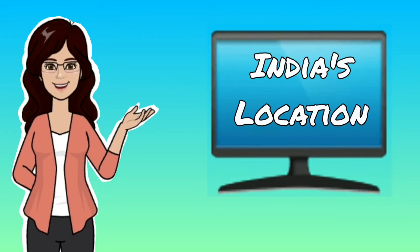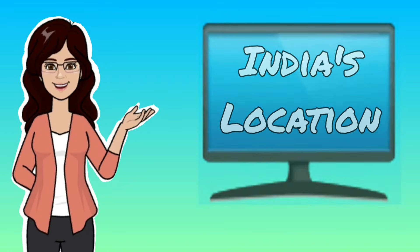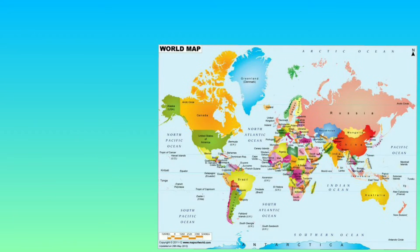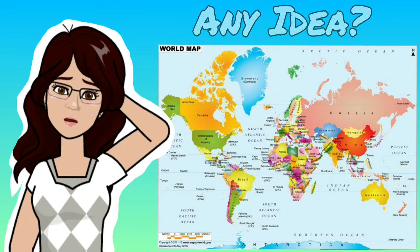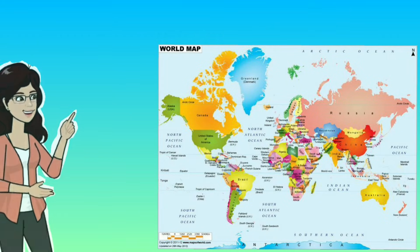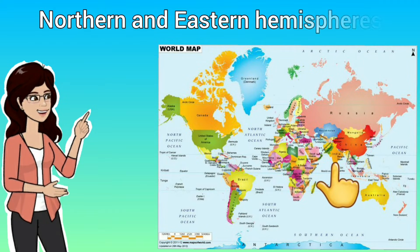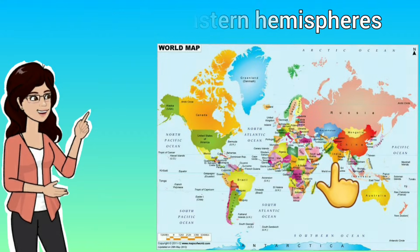In this video we are going to learn about India's location — where India is located on the world map. It is located in the northern and eastern hemisphere, but where exactly in the northern and eastern hemisphere?